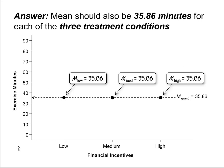The answer: the mean score for each treatment condition should also be 35.86 minutes. If you assume the null hypothesis is true and your independent variable has no effect, your best guess is that people in the low, medium, and high incentive conditions will all show a mean score of 35.86 minutes. That is what we would expect theoretically if the null hypothesis were true.